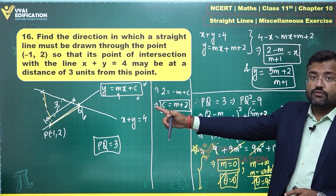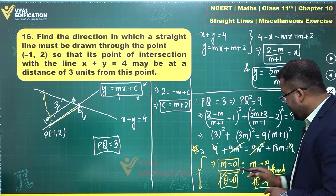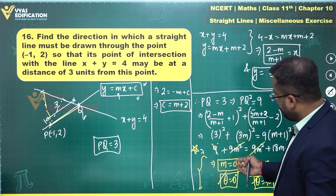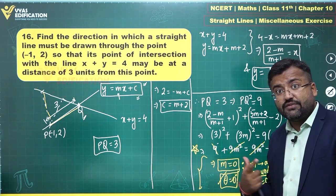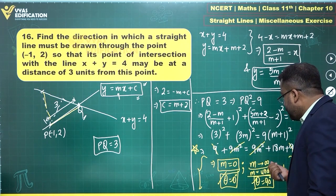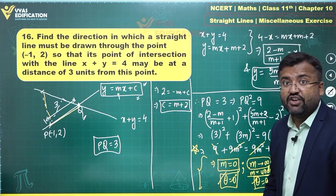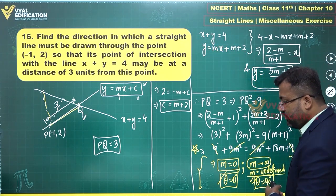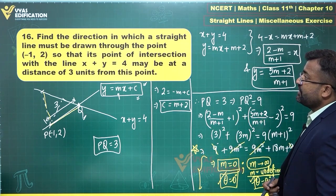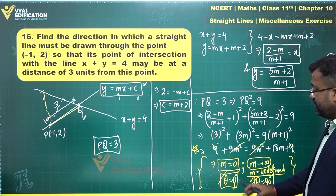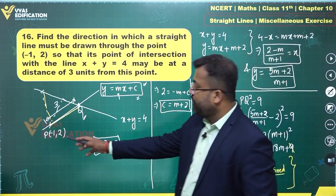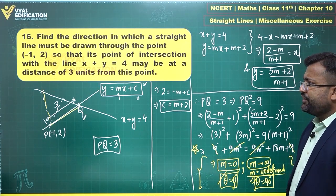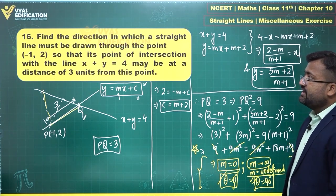Whenever you seem to be getting a quadratic and the m² term cancels in straight line problems, remember that one root — the undefined slope with inclination 90° — has been missed. So we take both θ = 0° and θ = 90°: one line is parallel to the x-axis (y = 2) and the other is parallel to the y-axis (x = -1). These give two possible points Q, and that is the final answer for question 16.